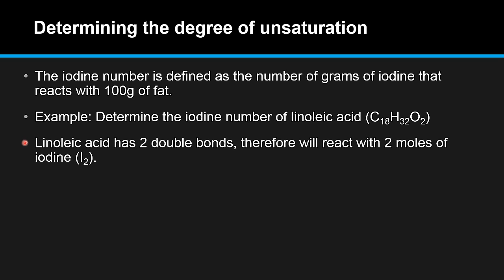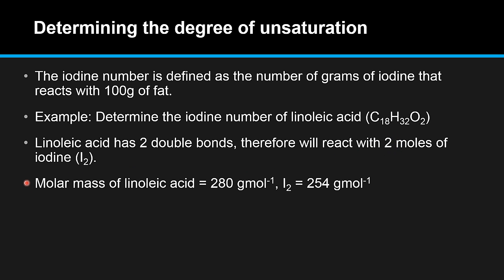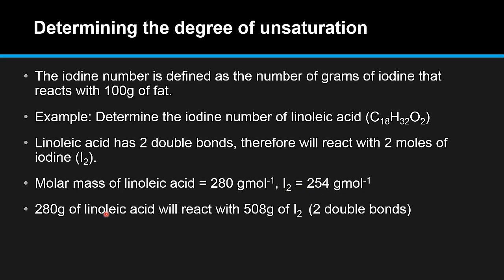Since 1 mole of double bonds reacts with 1 mole of iodine, and linoleic acid has 2 double bonds, it will react with 2 moles of iodine. The molar mass of linoleic acid equals 280 grams per mole. The molar mass of iodine (I2) is 254 grams per mole. So 280 grams of linoleic acid will react with 508 grams of iodine, because we multiply the molar mass of iodine by 2, giving us 508.